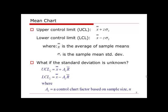The first method is used if we know the sample mean standard deviation, sigma x-bar. Sometimes the sample mean standard deviation may not be given directly; instead, we may be given sigma, the standard deviation of the population. In that case, we can use the formula sigma x-bar = sigma / sqrt(n) to calculate it, and then use the first formula to construct the control limits of the mean chart.